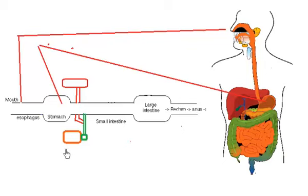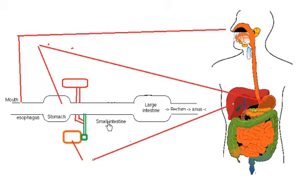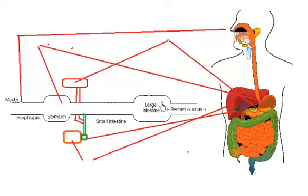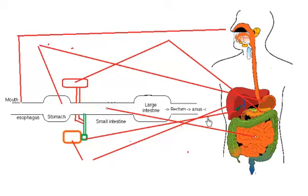This region over here represents the stomach. This region represents the liver over here, and this one represents the gallbladder. This is representing the pancreas.